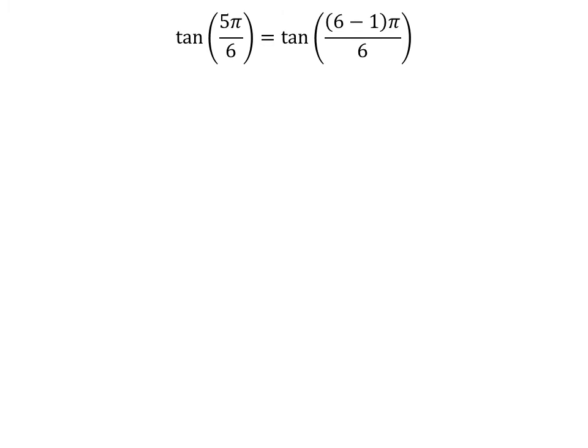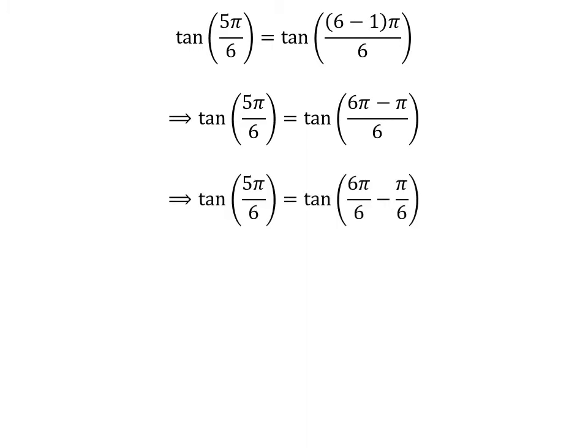We know 6 minus 1 is equal to 5, so tangent of 5 times pi upon 6 is equal to tangent of 6 minus 1 times pi upon 6. Expanding the numerator, we get tangent of 6 times pi minus pi upon 6. The fraction 5 times pi upon 6 can be expressed as the difference of two fractions: 6 times pi upon 6 and pi upon 6. Cancelling out the common factor gives us tangent of 5 times pi upon 6 is equal to tangent of pi minus pi upon 6.